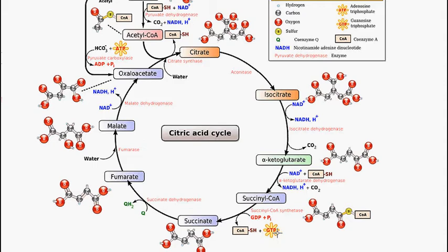The GTP can be converted into ATP by a nucleoside diphosphate kinase reaction. GTP plus adenosine diphosphate can give GDP and ATP.